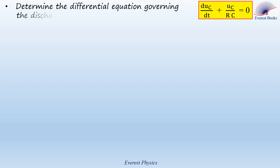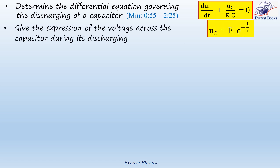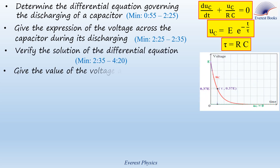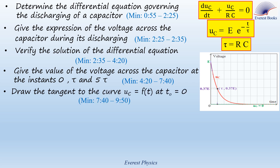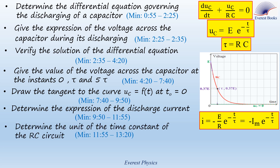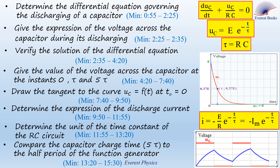In this video, we are going to determine the differential equation governing the discharging of a capacitor. Give the expression of the voltage across the capacitor during its discharging and verify the solution. Give the value of the voltage at instances 0, tau, and 5 tau. Draw the tangent to the curve UC at time 0. Determine the expression of the discharge current, the unit of the time constant, and compare the capacitor charge time 5 tau to the half period of the function generator.